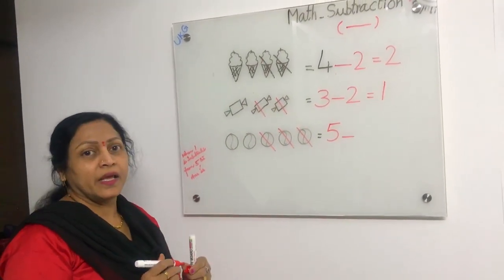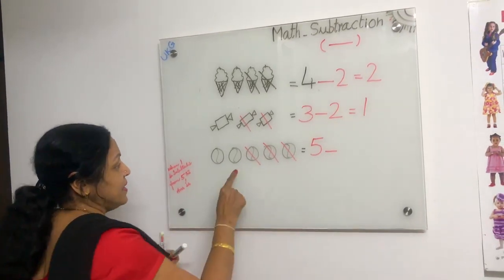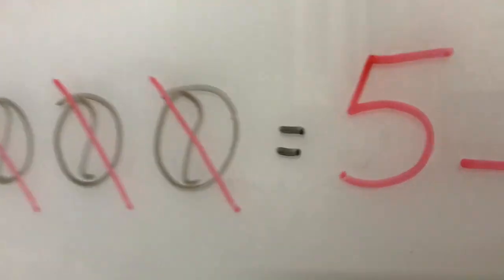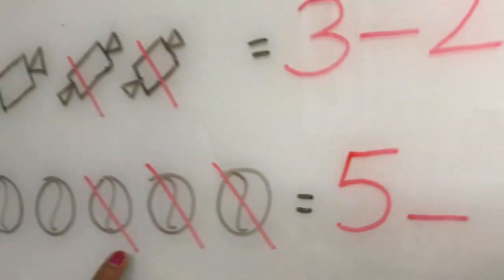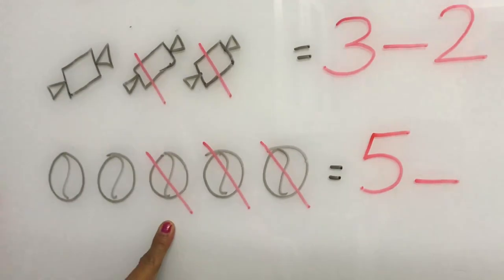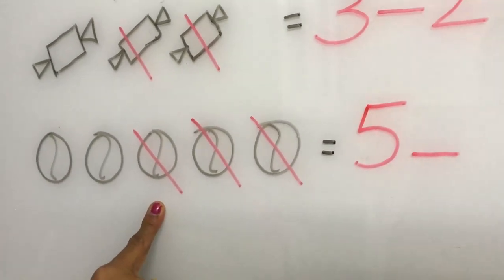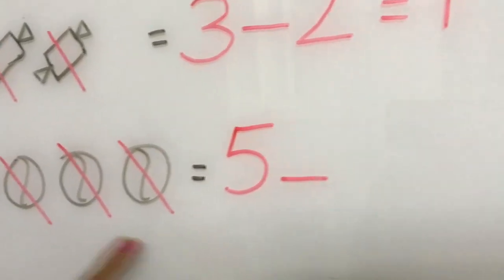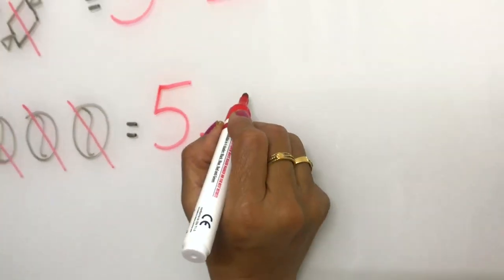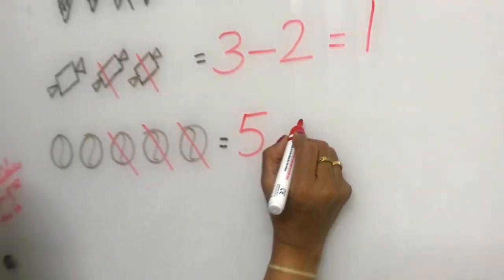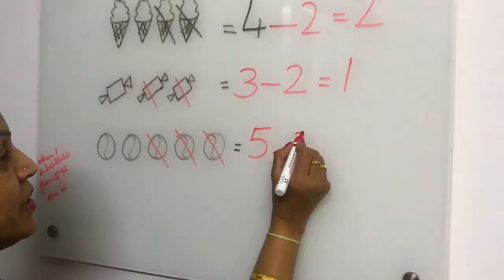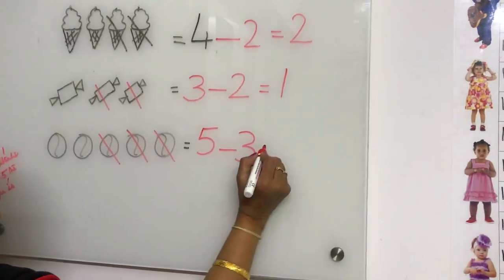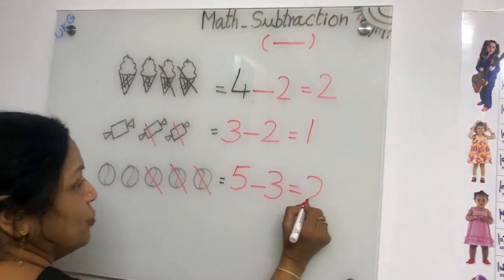So how many remaining balls are there? One, two. When three is subtracted from five, the answer is two. Five were there — one, two, three, four, five. We subtracted three — one, two, three. The answer is two.